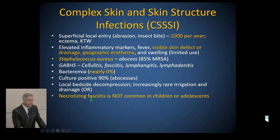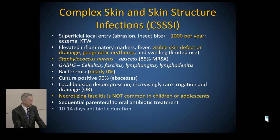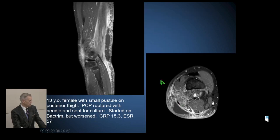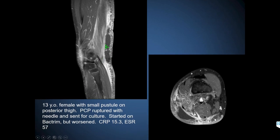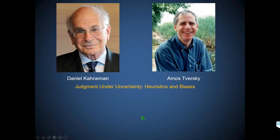Necrotizing fasciitis is not common in children and adolescents — in 23 years of practice I've never seen a case in a child or adolescent. I've seen it in adults: a patient in extremis, going to the OR urgently, tissues dissected away usually by general surgery, often ending in amputation. For skin and soft tissue infections: antibiotics IV then oral, 10 to 14 days, often managed with a straight oral course. Here's a 13-year-old with a pustule on the back of her leg that was ruptured with a needle — she got much worse. An MRI was obtained, but the history and physical and the active drainage site told us everything.